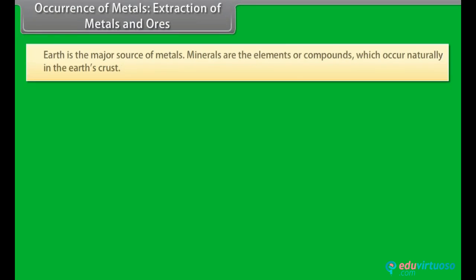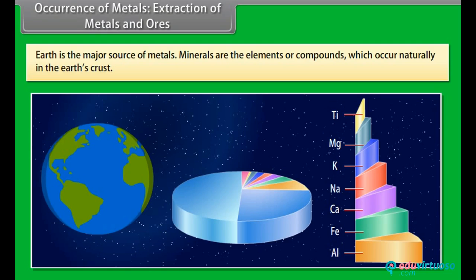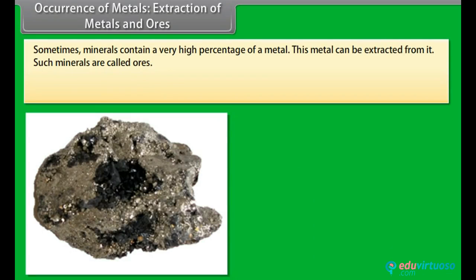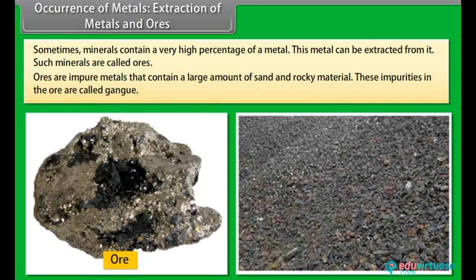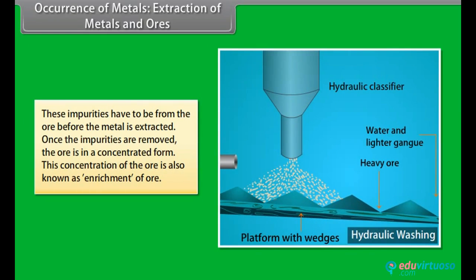Occurrence of Metals. Extraction of Metals and Ores. Earth is the major source of metals. However, seawater also contains some soluble salts. Minerals are the elements or compounds which occur naturally in the earth's crust. Sometimes minerals contain a very high percentage of a metal. This metal can be extracted from it. Such minerals are called ores. Ores are impure metals that contain a large amount of sand and rocky material. These impurities in the ore are called gangue.